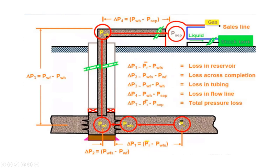We have hydrocarbon at a particular reservoir pressure. It moves towards the wellbore. At the sand face, we have a different pressure pwf, and this pwf must be lower than the reservoir pressure. At the bottom of the wellbore, we have the bottom hole flowing pressure, and at the top of the wellbore, we have the wellhead pressure. Since hydrocarbon is moving in this direction, the wellhead pressure should be the lowest pressure along this line, because the reservoir pressure is greater than the borehole pressure.